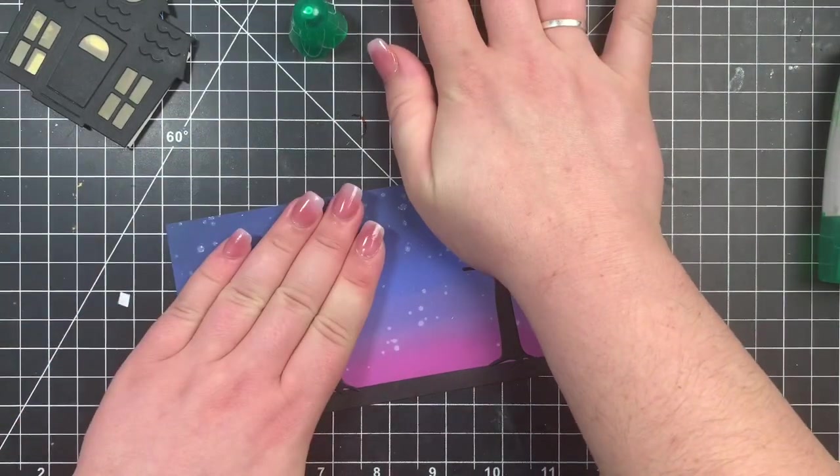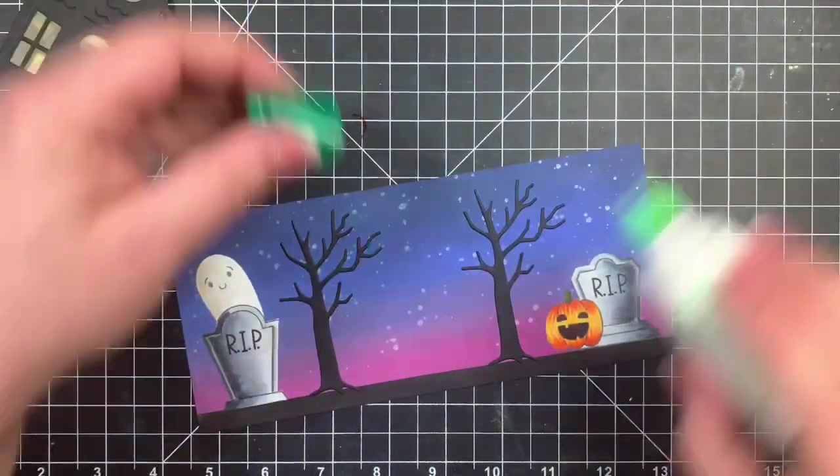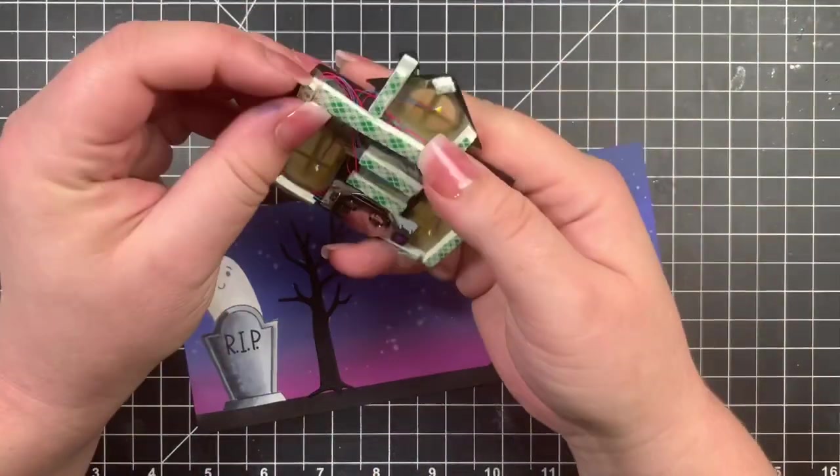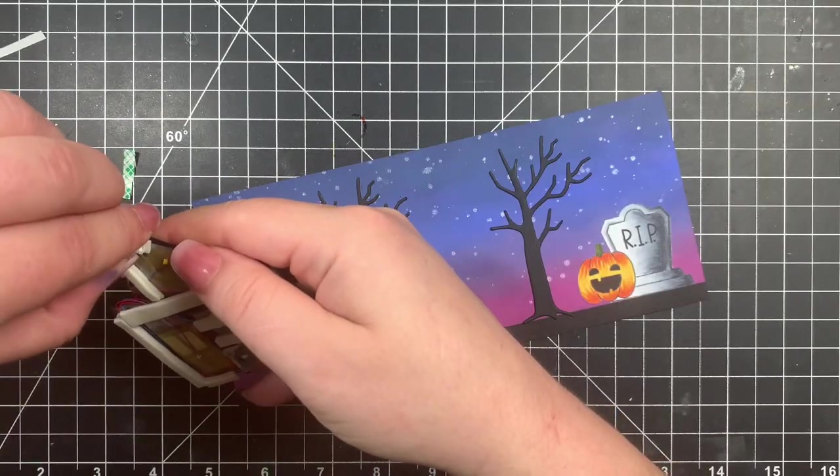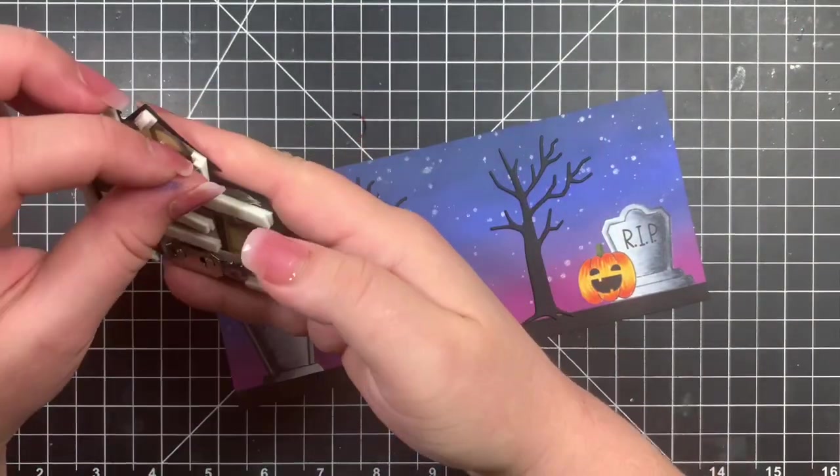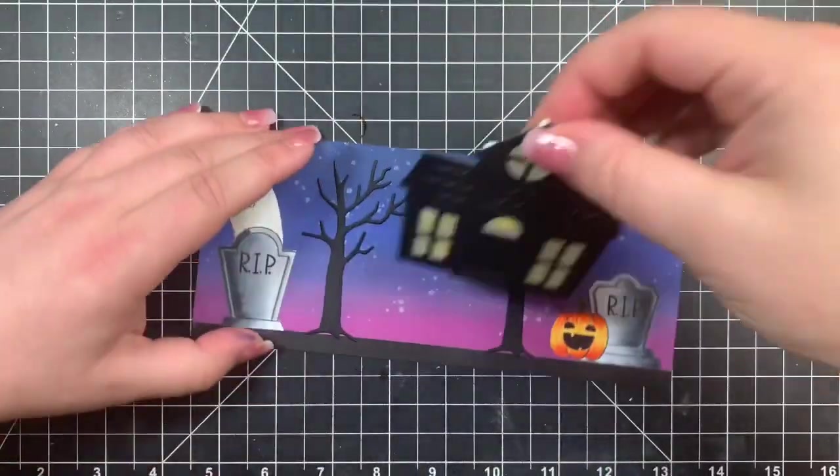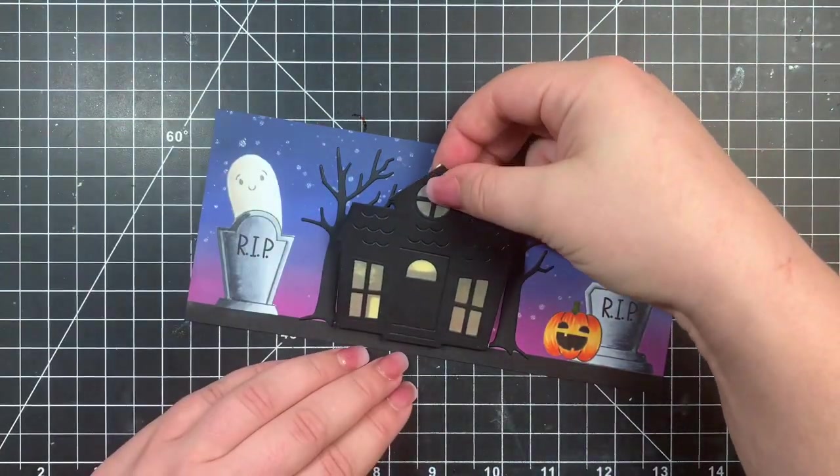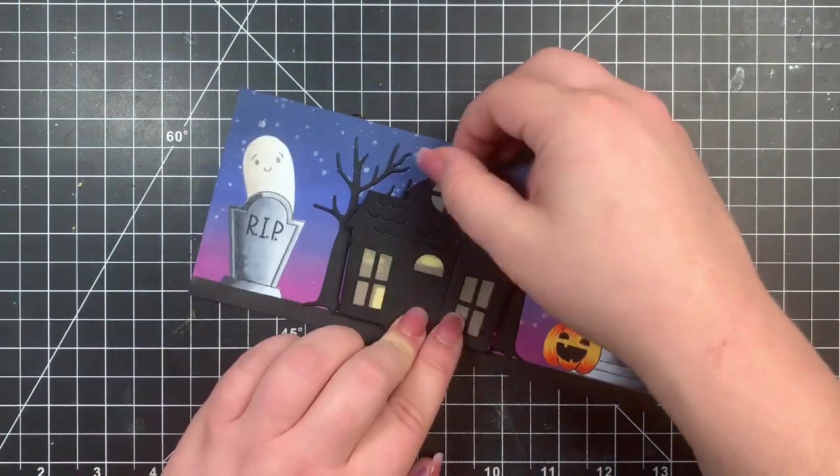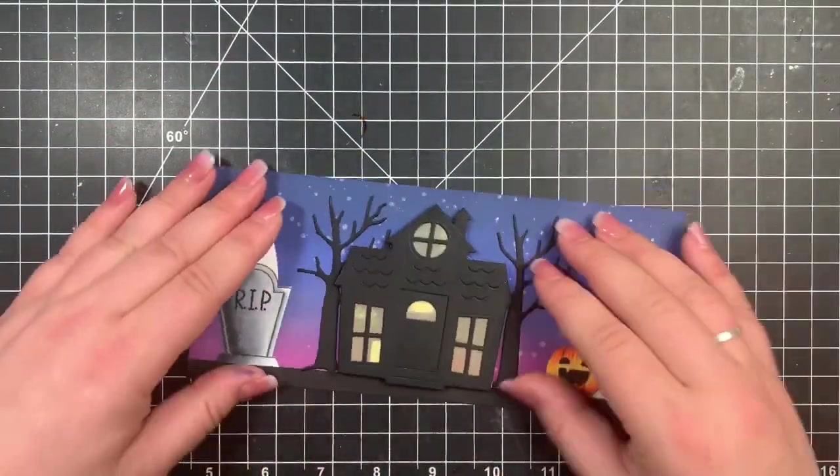So I did that for both of the trees and then I can adhere my house. So I removed the backing obviously from the foam tape and adhered that right in the middle of those two trees. And of course had to test it out a few more times just to kind of see where I could see the wires or see any of the adhesive and I decided to cover them up with the remaining pieces of the die set.